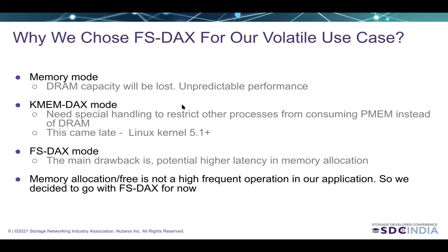After considering all three PMEM volatile mode options, we decided to go with FSDAX for our volatile use case. In memory mode, we would lose the DRAM capacity and performance would be unpredictable. In KMDAX mode, we need special handling to restrict other processes from consuming persistent memory, because once KMDAX is enabled, even normal libc malloc can get memory from the PMEM device, which can create performance issues in existing applications. Also, KMDAX is a relatively recent feature, available from Linux 5.1, so we are still exploring it.